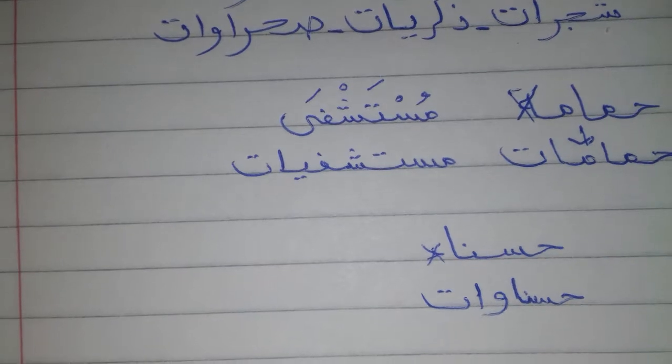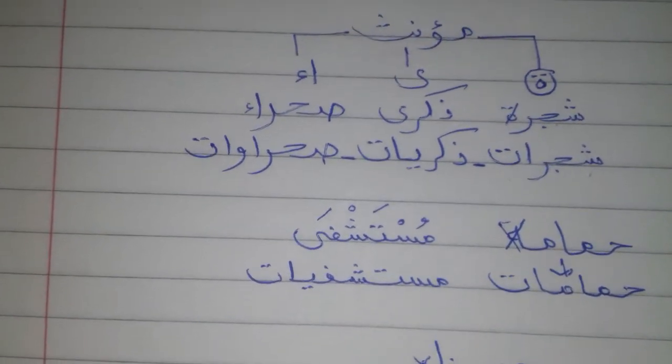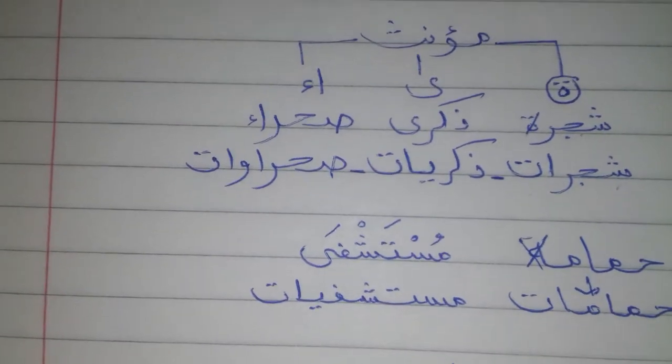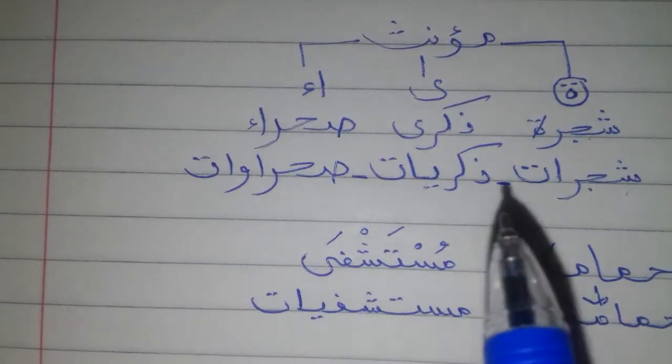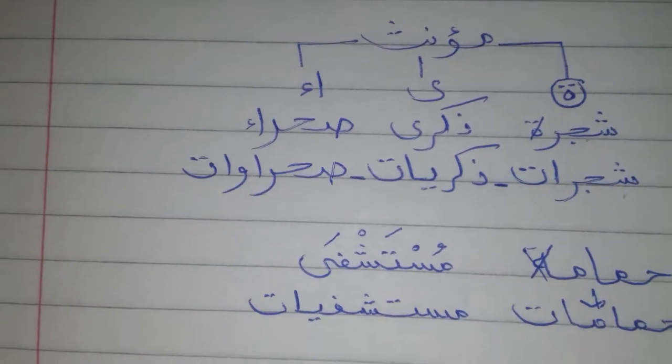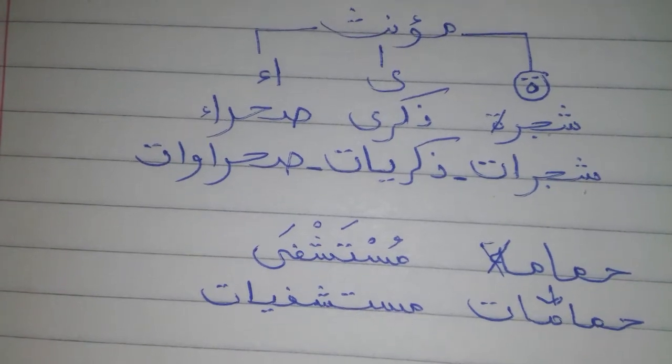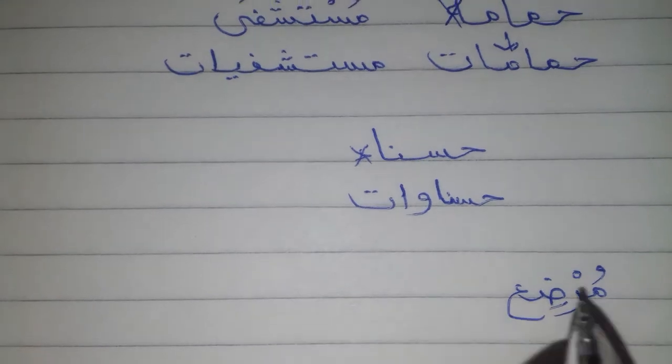It's a bit more challenging than Jam'u al-muzakkar as-salim, or the masculine plurality, because feminine words have various signs indicating femininity, so that's why it's a bit harder. Also, we use the feminine plural for words that describe women only. For example, murda' means a breastfeeding woman, so we just add alif ta' at the end — murda'at.